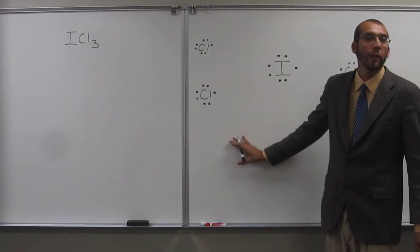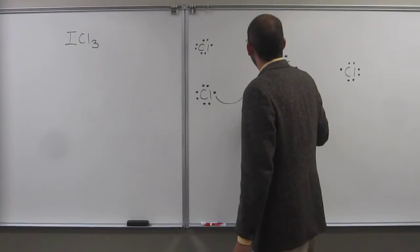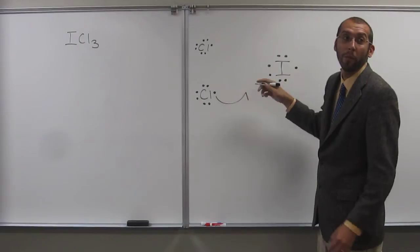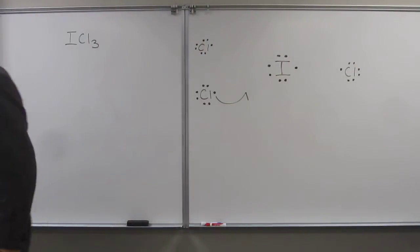Okay, did everybody get to this point? So now we're going to show our fish hook arrows. So notice, this we would normally think of as a lone pair, right? But what can happen is it can split those two up.